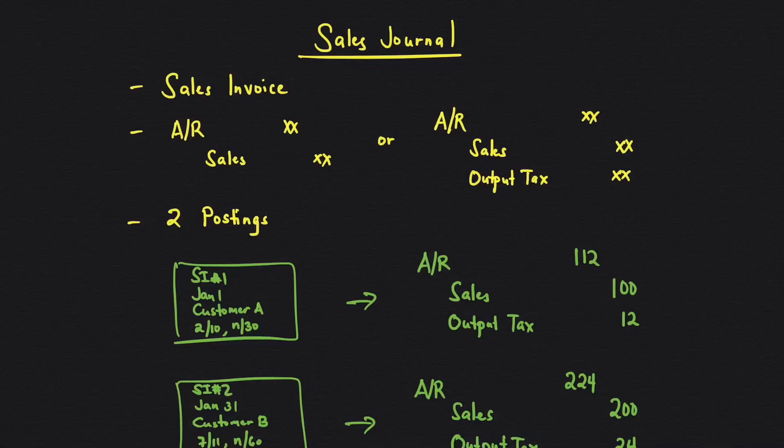In this video, I'm going to talk about one of the types of special journals, which is the sales journal. The business document related here is the sales invoice, and then you have the entries related. Although this is the general journal format, we will not be doing this in the sales journal.